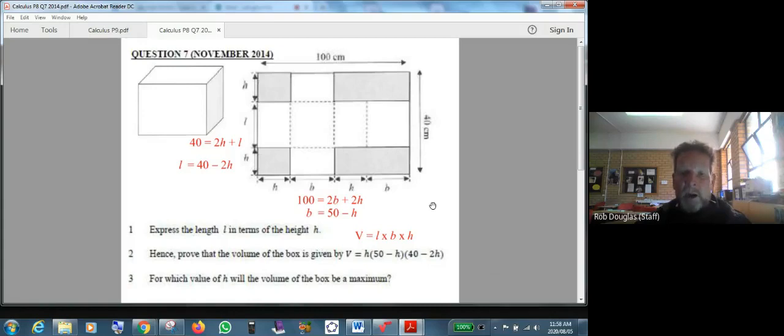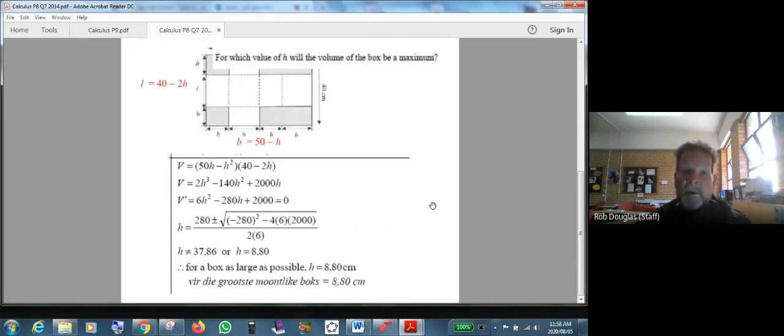Now the last question says how do we make h the height that will make the volume of the box maximum? Well, this is all you have to do. We've got the length, we've got the base, we know the height, we just multiply them together. If you take h and multiply it by 50 minus h, you get 50h minus h squared. And then we just do FOIL on it. 50h times 40 is 2000h. Minus 40 minus 100, that's minus 140h squared. And then we have minus h squared times minus 2h, that's positive 2h cubed.